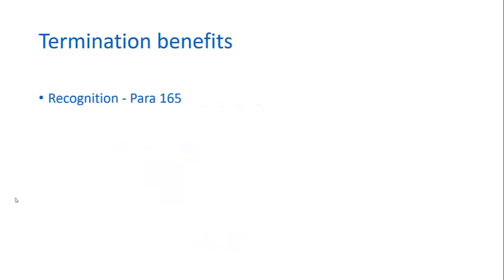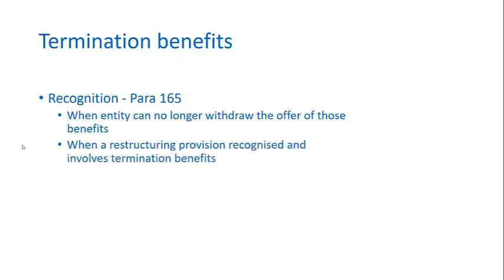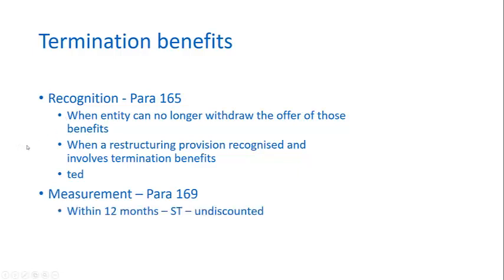Termination benefits often arise in the construction industry, where an enterprise agreement specifies that at the conclusion of a contract, because all workers are being paid off, there will be a mandatory termination benefit. In terms of recognition, paragraph 165 says you have to recognise it when it's no longer able to be withdrawn, and if it involves a termination benefit as part of a restructuring provision, it must also be recognised. In terms of measurement, addressed in paragraph 169, if it's within 12 months it's recognised as a short-term benefit and therefore undiscounted, and if it's a long-term benefit it's recognised on the same basis as other long-term benefits and discounted. What we're seeing persistently across long-term benefits is that we have to recognise the expected cash flow to settle on a fair value basis.